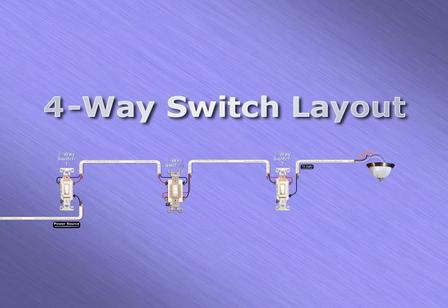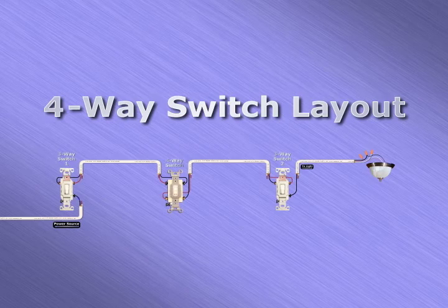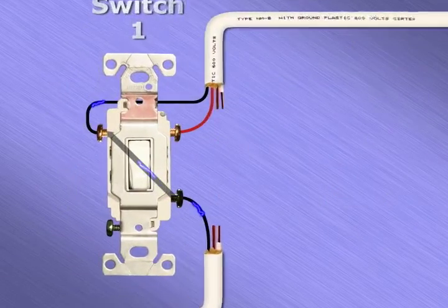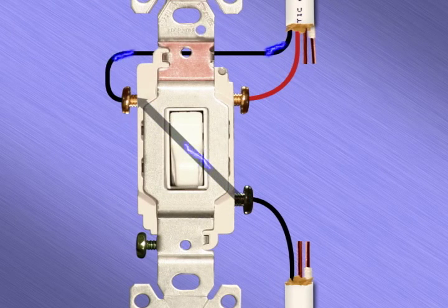Now let's see how this four-way switch setup will function when electricity is flowing through the circuit. Incoming current will arrive first at the first three-way switch's common terminal.